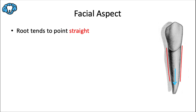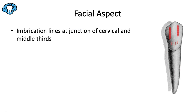Same as the maxillary canine, we have developmental depressions separating the crown into thirds, and the distal developmental depression is a little bit deeper. Don't forget about the imbrication lines — those are common at the junction of the cervical and middle thirds of the crown for this tooth.